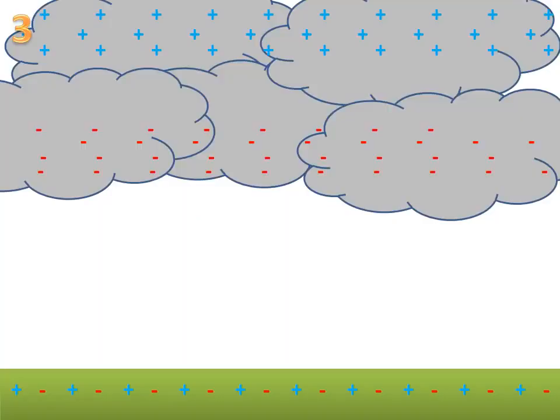All right, so number three. If we look in the cloud, we now have a lot of positives at the top of the cloud. We have a lot of negatives in the bottom of the cloud. Well, something's going to happen to the ground. Once we get a lot of negatives in the bottom of the cloud, watch what happens to the ground. All right, I'll show you again. The negatives within the ground actually become repelled. Here it comes again.